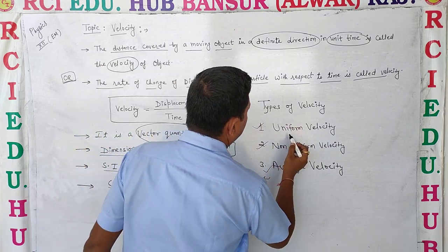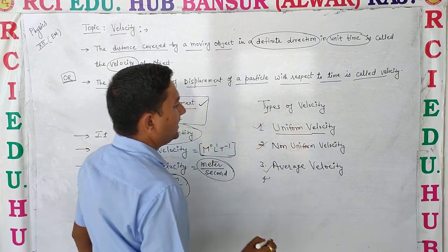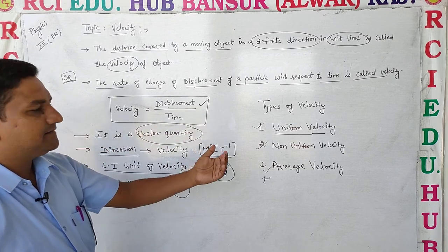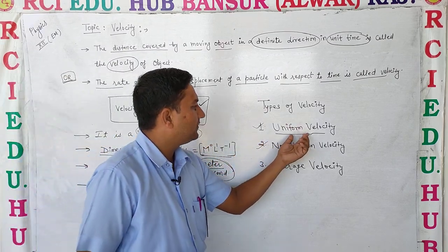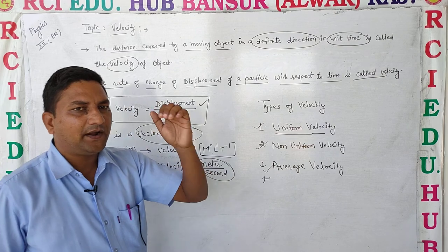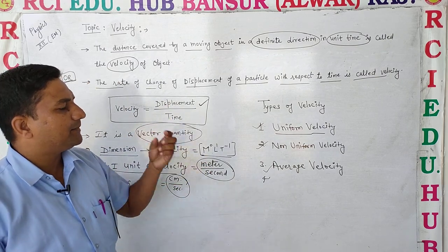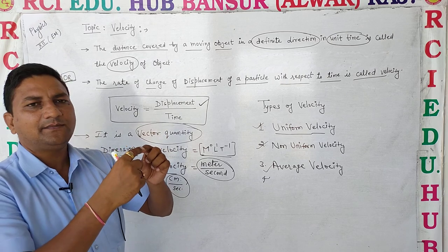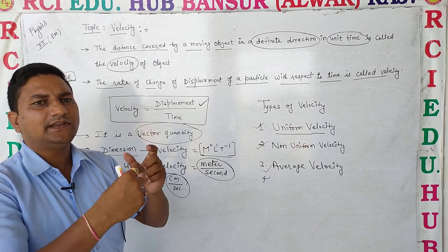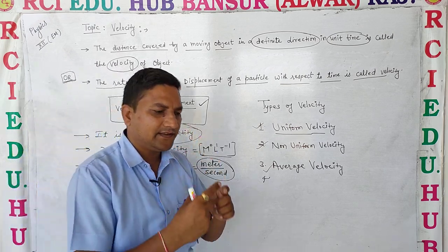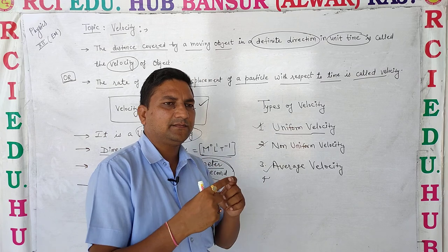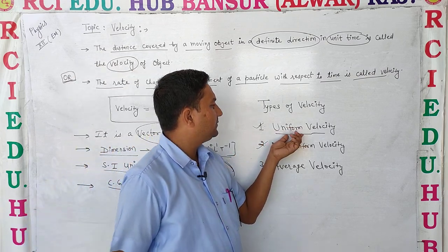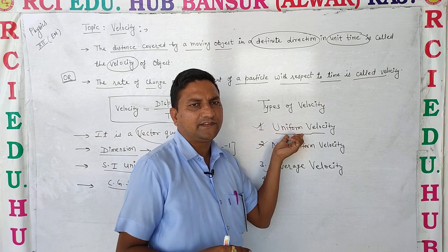Uniform velocity: if a moving object covers the same displacement in the same direction over equal time intervals, it is said to have uniform velocity. This also corresponds to uniform speed.